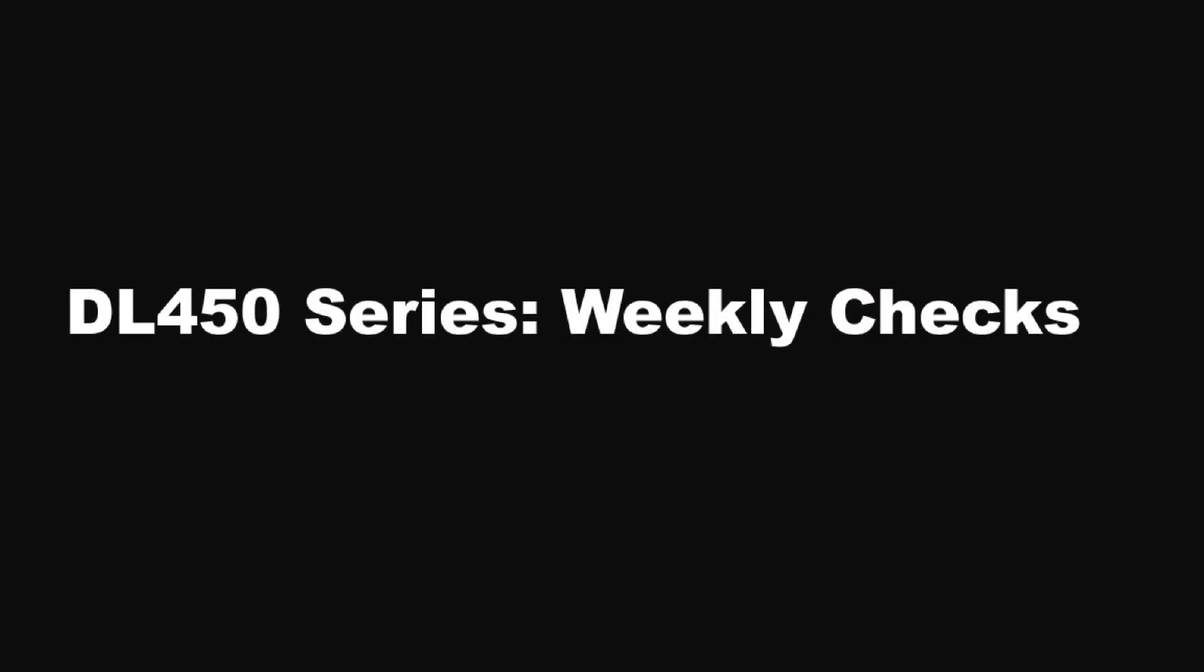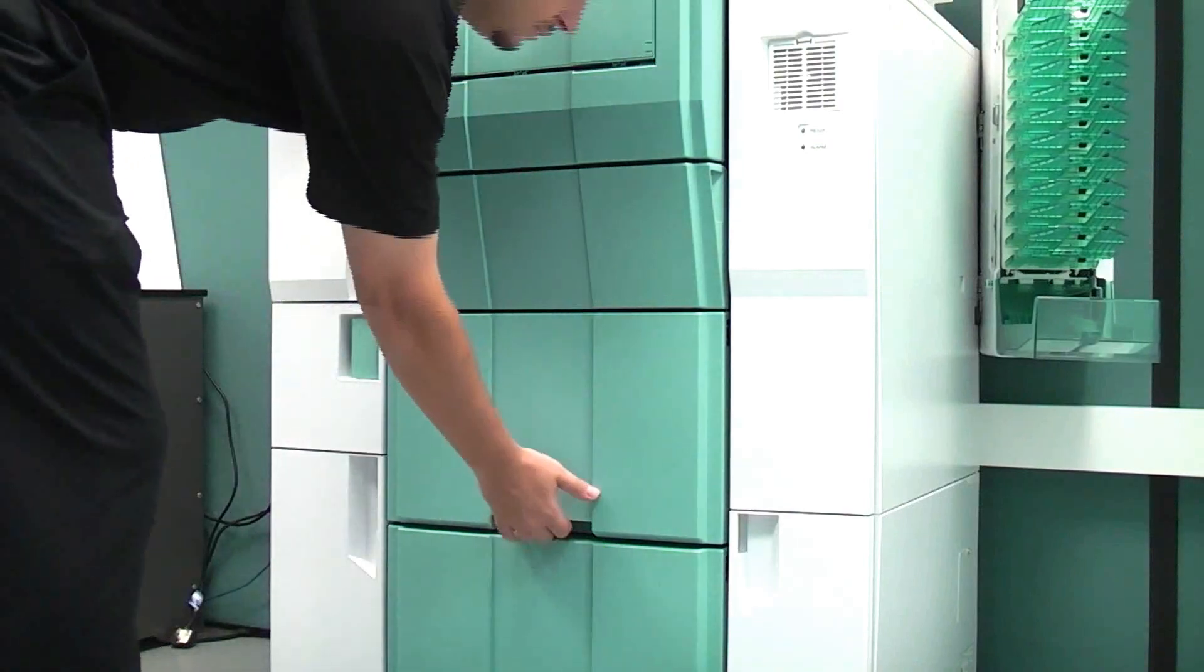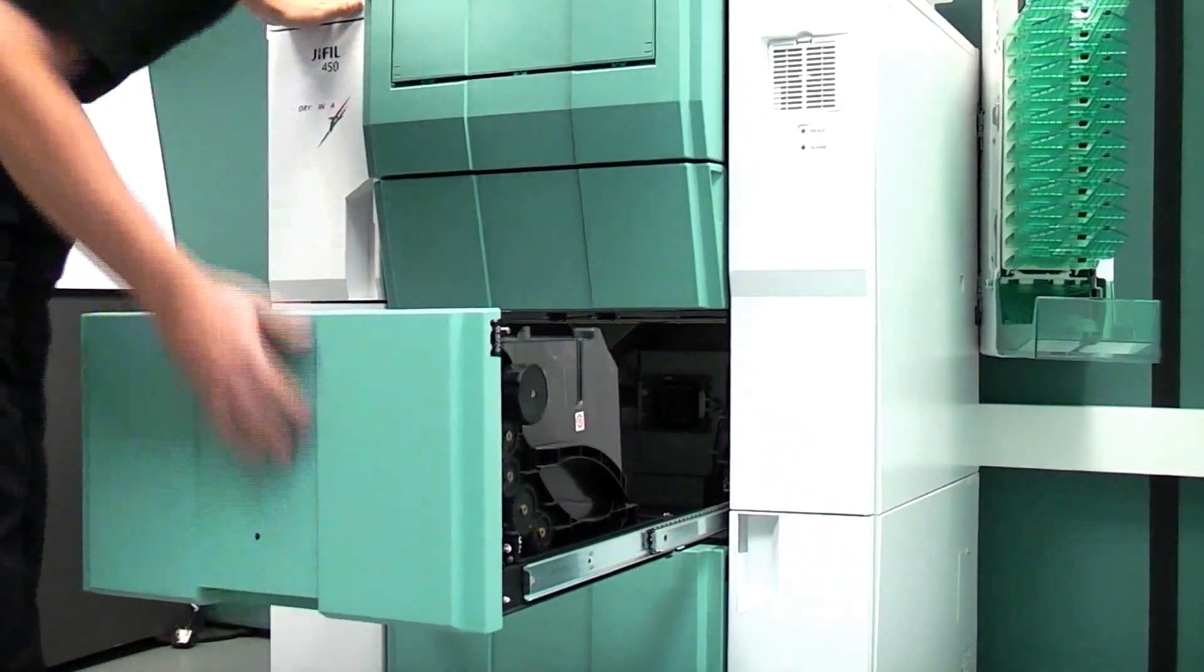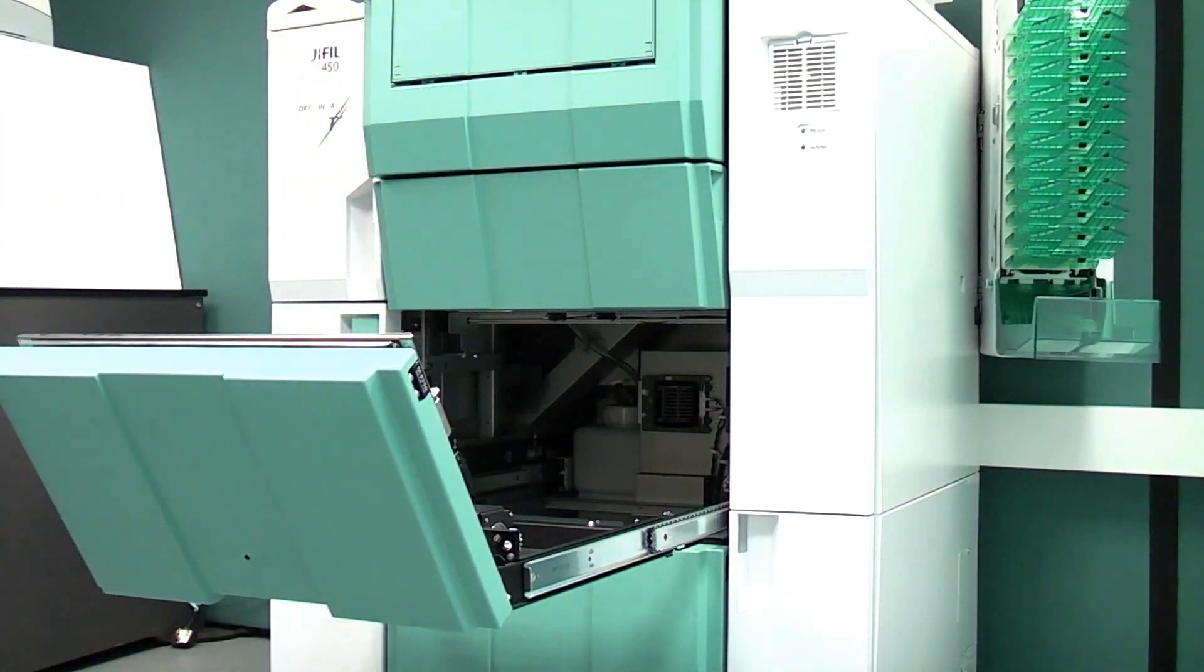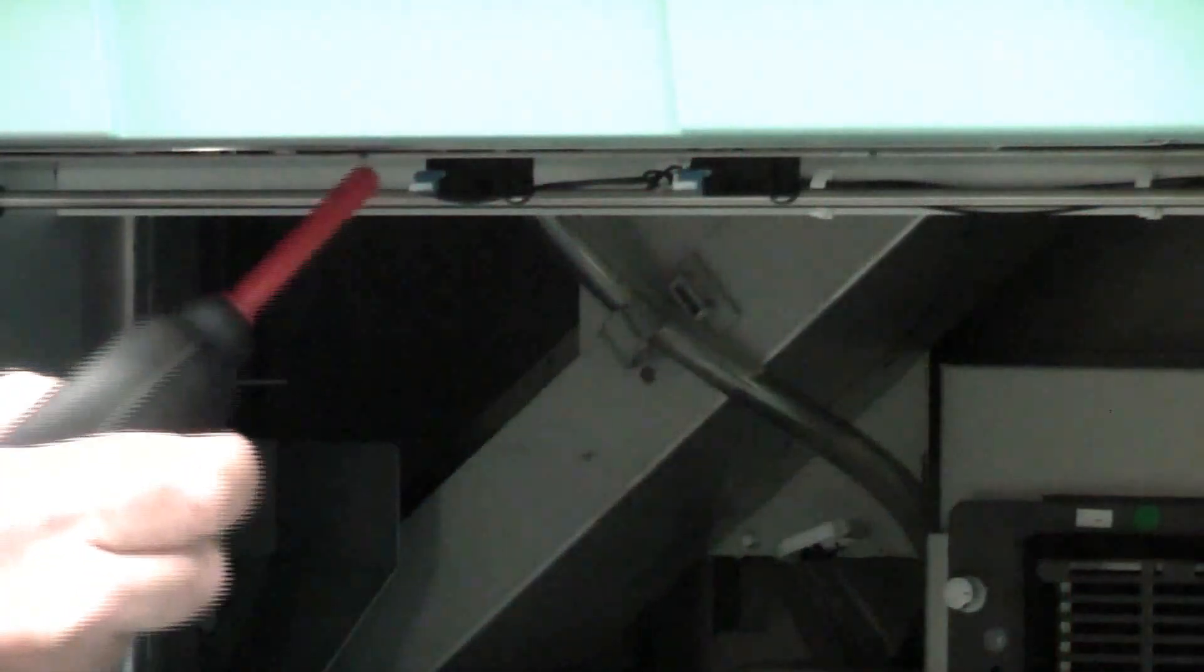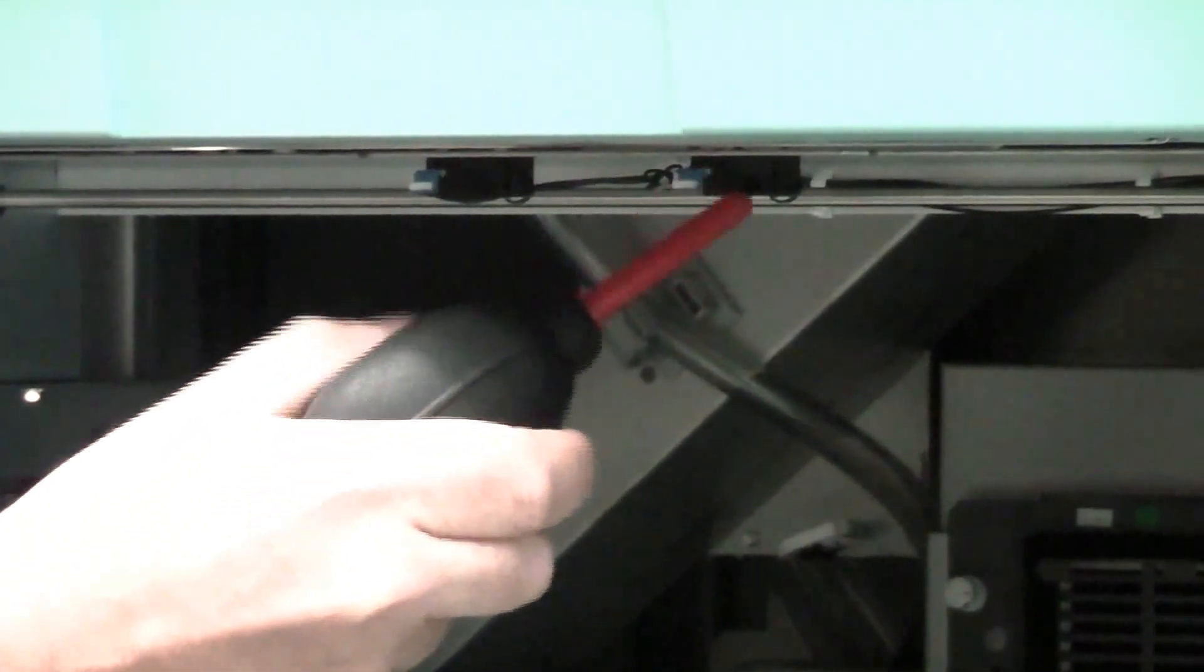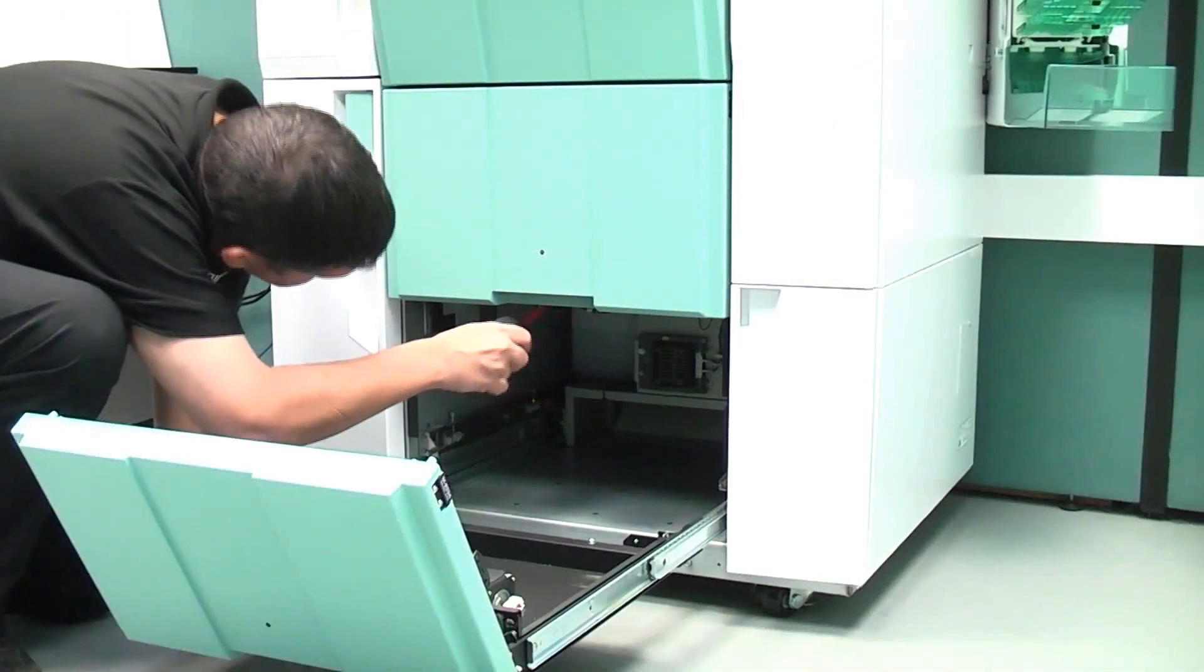DL450 series weekly checks: Paper supply unit sensors. Pull out the upper paper supply unit, remove the paper magazine, and clean the left and right paper end sensors with a blower brush. Replace the paper magazine, then repeat the procedure with the lower paper supply unit.